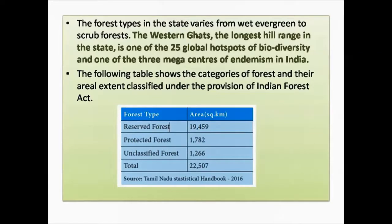The Western Ghats are the longest hill range in the state and are one of the 25 global hotspots of biodiversity. Biodiversity hotspots are regions that are biologically fertile — rich in distribution of plants and animals — and at the same time highly endangered. The Western Ghats are also one of the three mega centers of endemism in India, meaning the animals or plants in that region live only in that particular location.